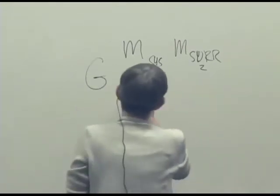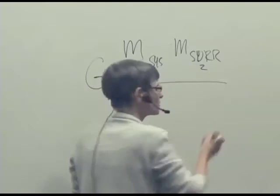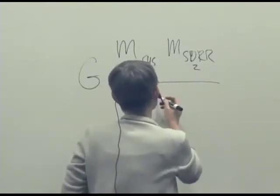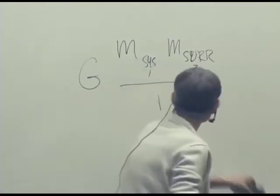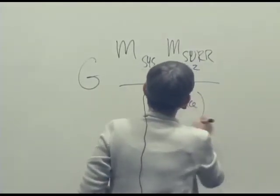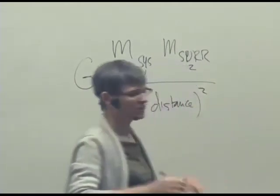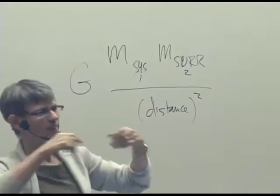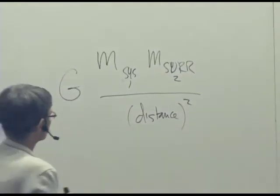So therefore that better go in the denominator. And it turns out that it might have been proportional to distance. It turns out that it's proportional to the square of the distance. So it falls off fast as distance gets bigger.